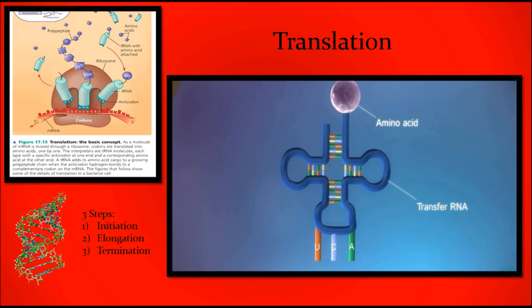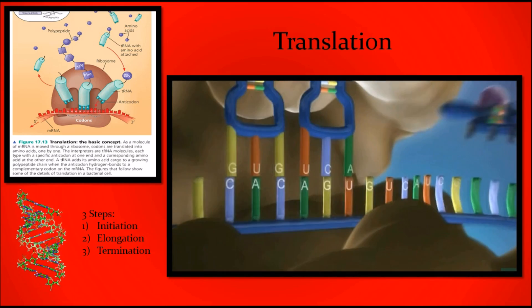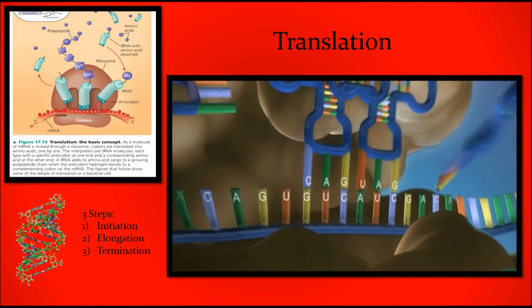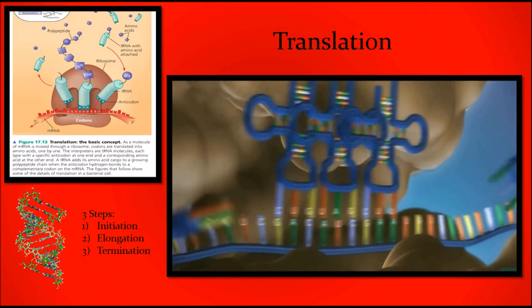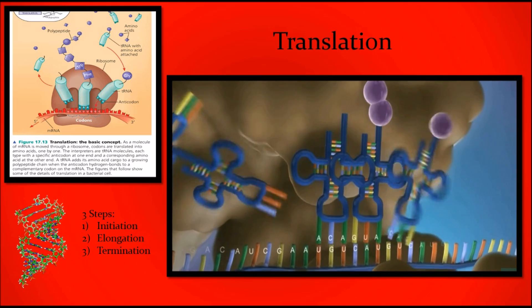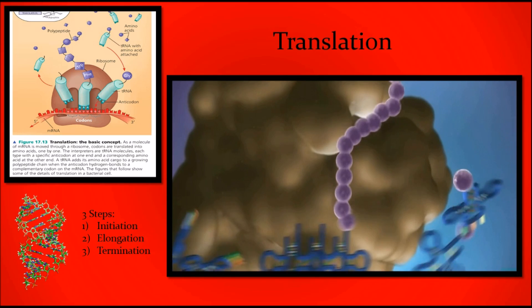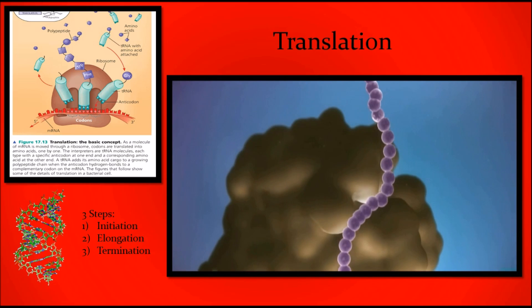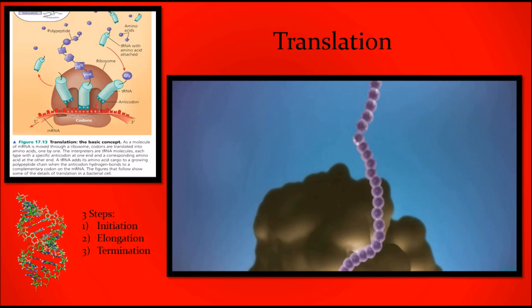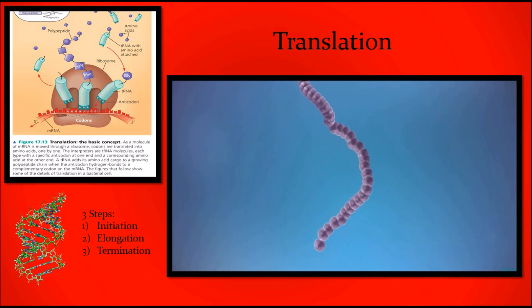Translation real quick - the real protein synthesis in ribosomes - codons have the code, tRNA reads, matches amino acids, forms polypeptide chain - start at AUG and get a protein